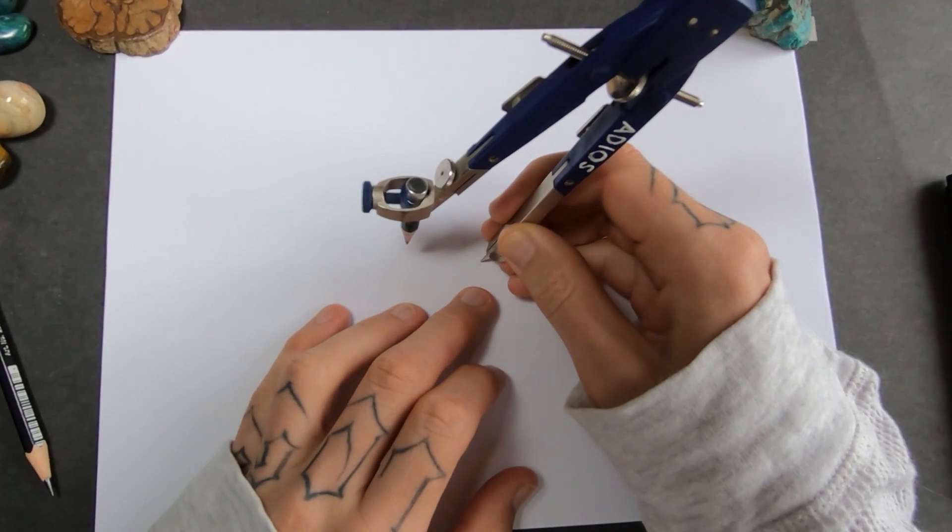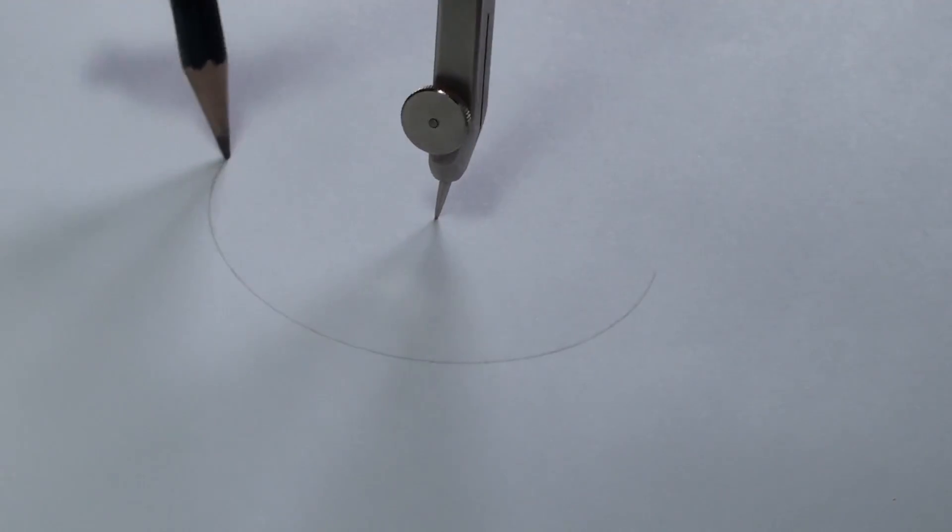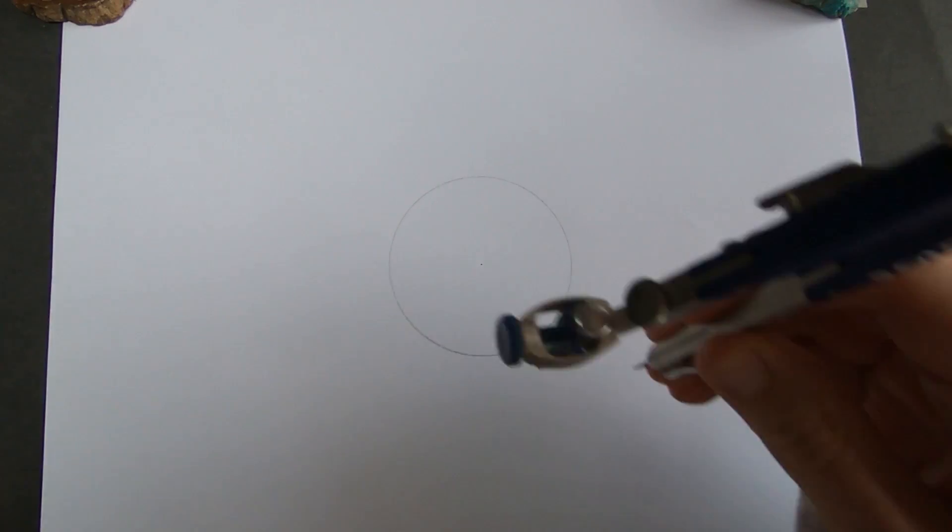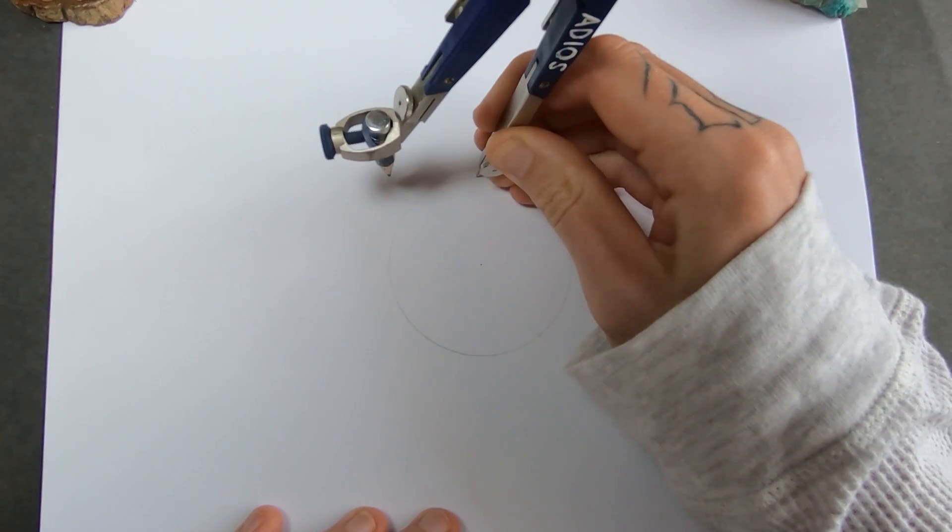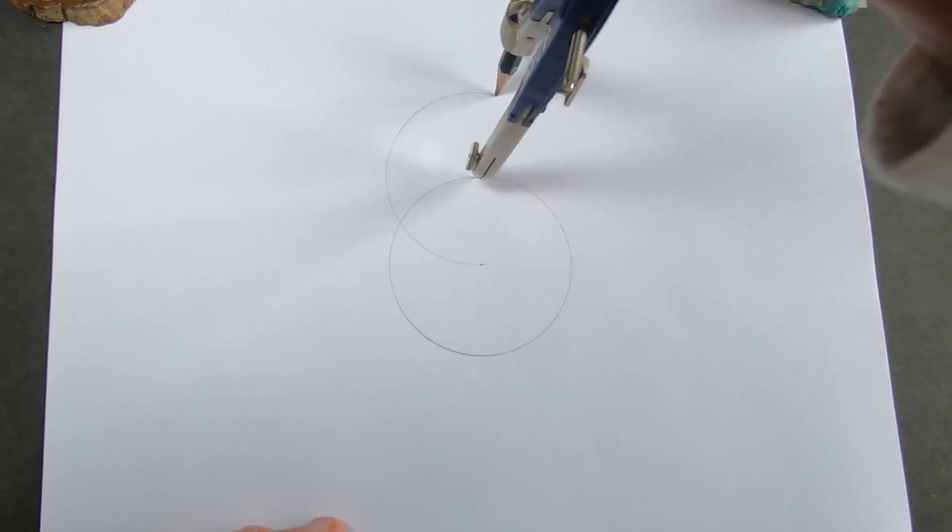So I'm going to start off with a circle, obviously. The radius of the compass is 3.3 centimeters. Then I'm going to go straight up, put my compass point on the circle, draw another circle the exact same size.